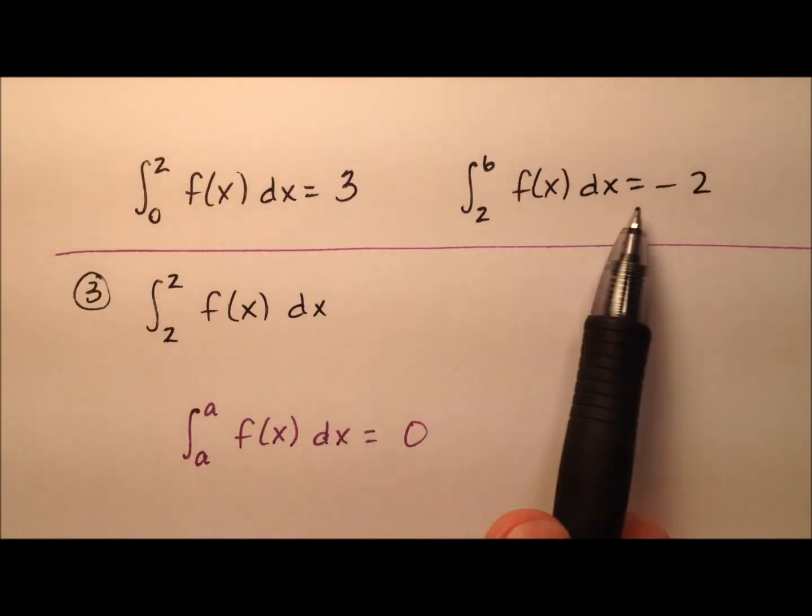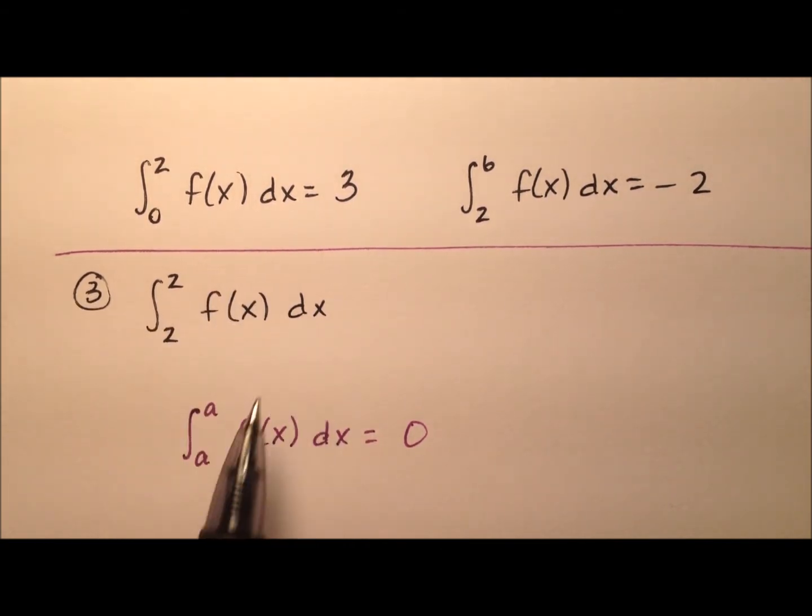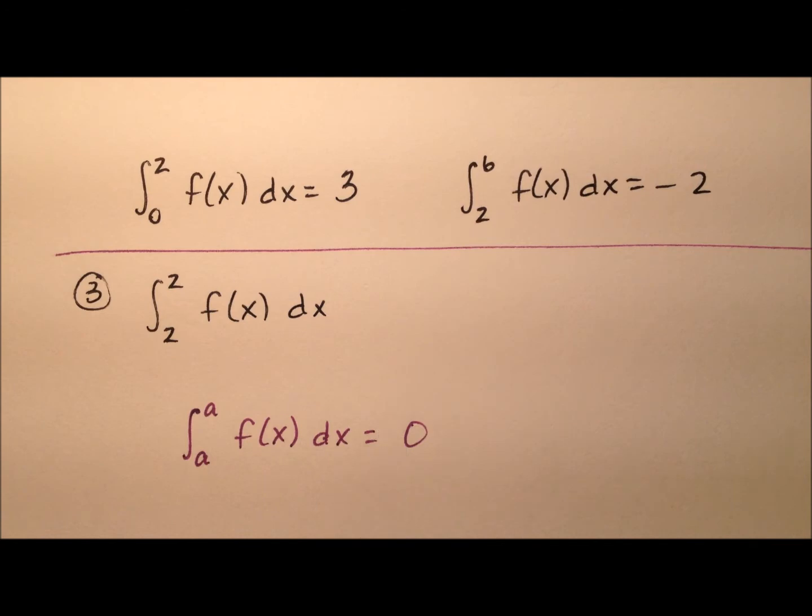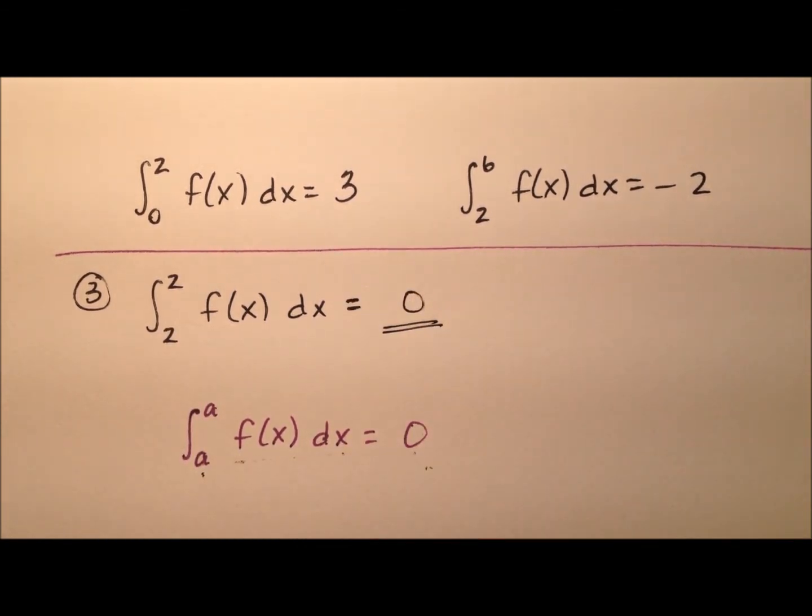In this third example, we're looking for the integral from 2 to 2 of our function. We have a property of definite integrals which says if the limits of integration are the same, like a to a, then the integral is 0. This makes sense because if you think about finding the area under the curve, if the width goes from a to a, the width is 0, so anything times 0 is still 0. Therefore, the integral from 2 to 2 equals 0.